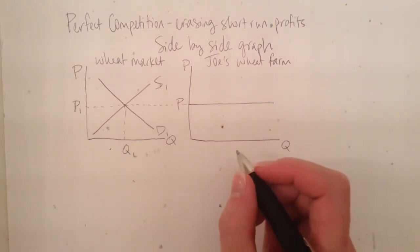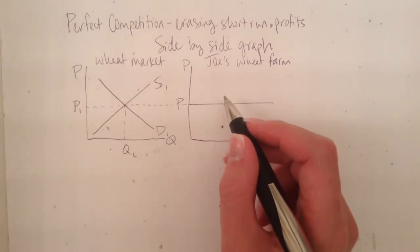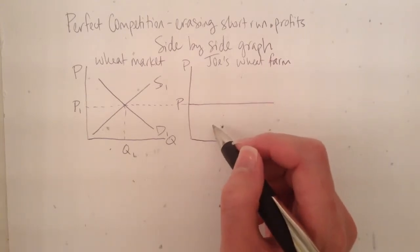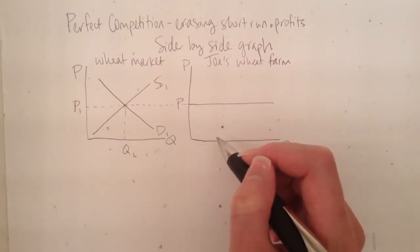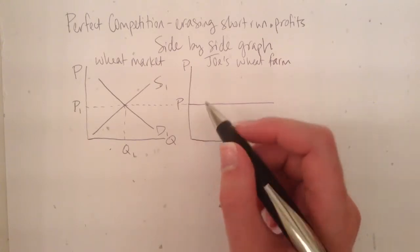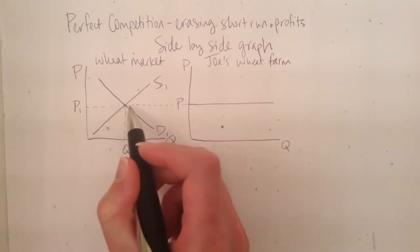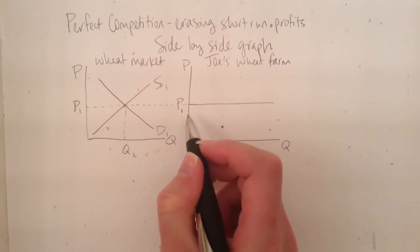He won't be able to get any other price because if he charges more, there's so much competition and so many other suppliers that nobody will buy his wheat. And he wouldn't want to charge less because that's not really in his best interest and since there are no barriers to entry, it's not like he can just drive out all the competition. There's always going to be competition. So Joe is a price taker at the market price. And so the side-by-side graph is perfect for showing that because you can draw this dotted line connecting them and that represents that these two prices are the same price.